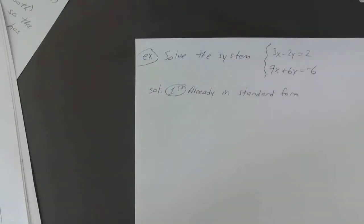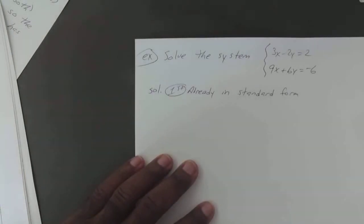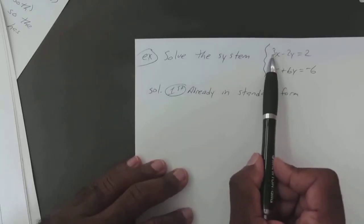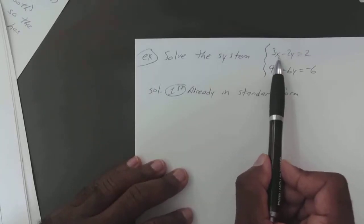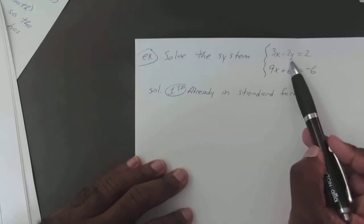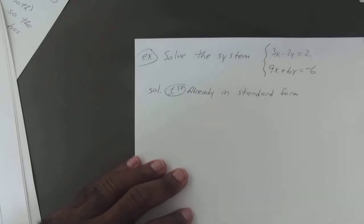Now, your second step is you want to be able to multiply it to where one of the variables disappear when you add them together. You can multiply this first one by negative 3, because negative 3 times 3 would be negative 9. You add that with 9, it'll disappear. Or, you can multiply it—actually, negative 3 would work for that one, too. So, we'll kind of see what we end up with there.